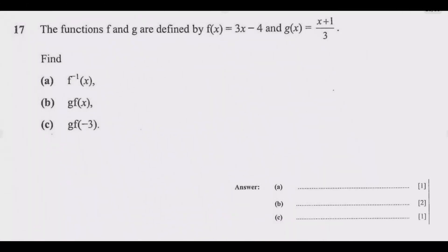The functions f and g are defined by f(x) equals 3x minus 4 and g(x) equals (x plus 1) divided by 3. Find: (a) the inverse of f(x), (b) g(f(x)), and (c) g(f(-3)).